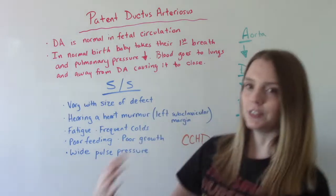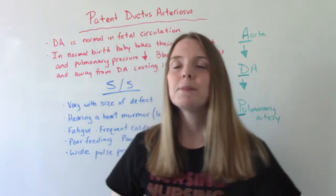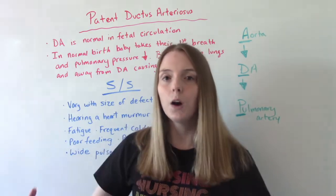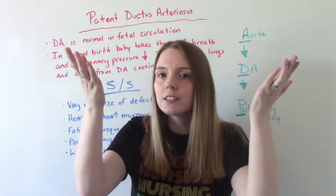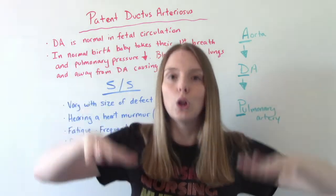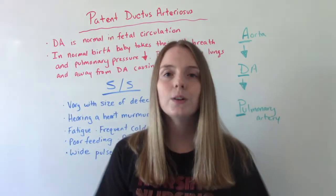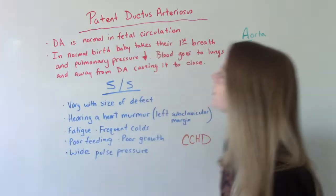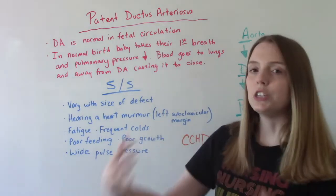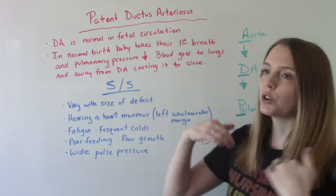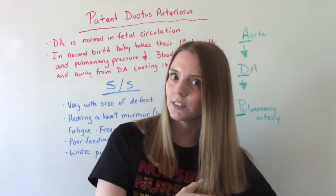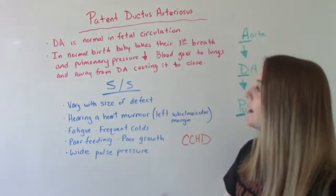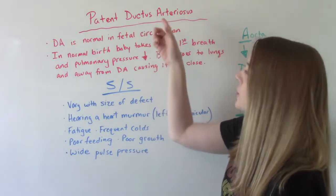Then labor and delivery happens, the baby is born, and they take those first breaths. The lungs fill up with oxygen, that fluid comes out, and the lungs, which were super high resistance, now become low resistance — low pressure. Blood likes to go to areas of low pressure, so in normal, healthy deliveries the baby takes their first breath, which decreases the pulmonary pressure. The blood starts going to the lungs instead of away from the lungs like it did as a fetus, and normally this is enough to cause the ductus arteriosus to close.